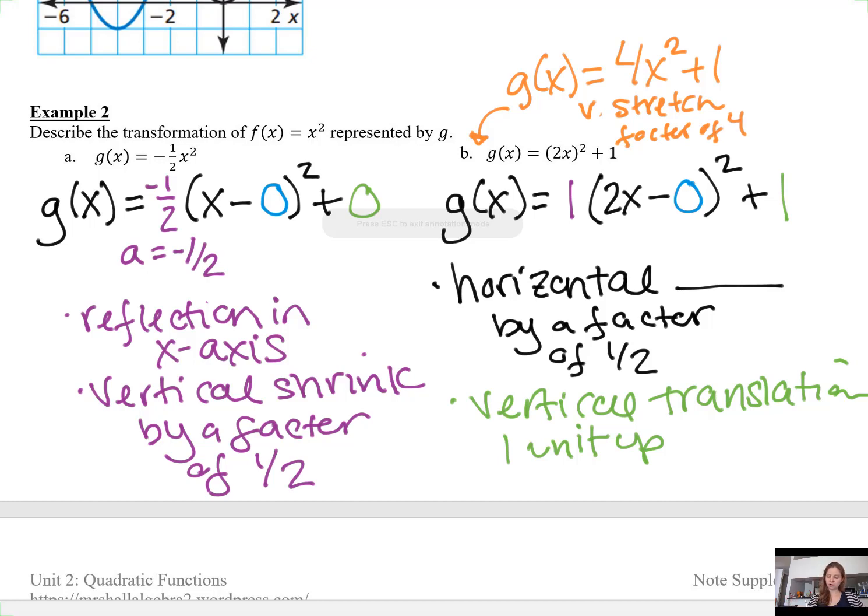So if it's a vertical stretch, it's going to be a horizontal shrink. So this one I put the answer as a horizontal shrink by a factor of 1/2 and a vertical translation 1 unit up.